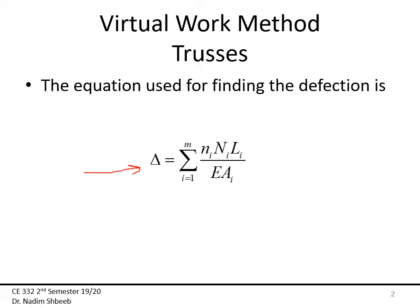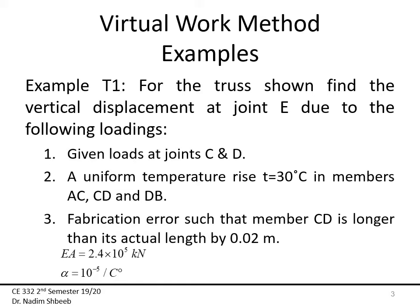The deflection is simply the summation from i equals one to the number of axial members: little n times big N times L divided by EA. Usually E does not change. If it does, then it's just going to be Ai, but that seldomly happens.